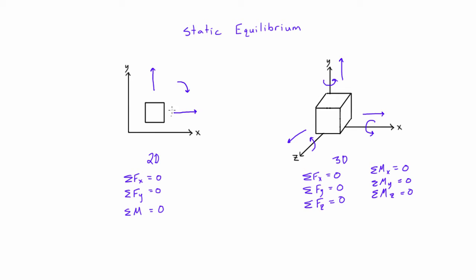When we looked at 2D problems, we had sum of forces in x, sum of forces in y, and the moment we used was actually just the sum of moments about the z-axis, since that axis comes out of the plane. That's how we get six equations of equilibrium in a 3D problem. As long as all six equal zero, the object is in static equilibrium.